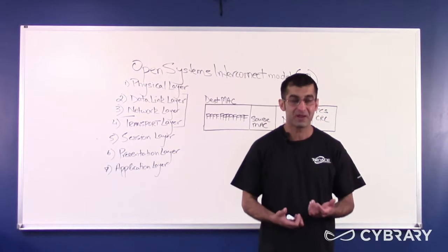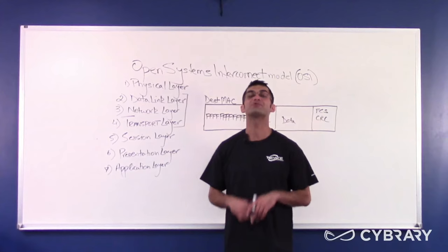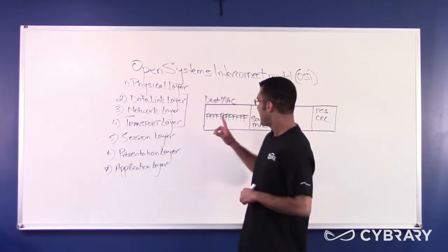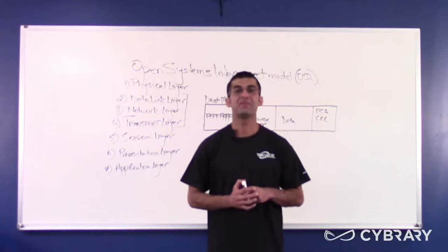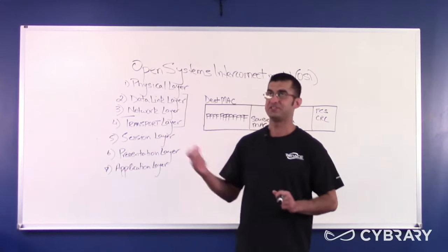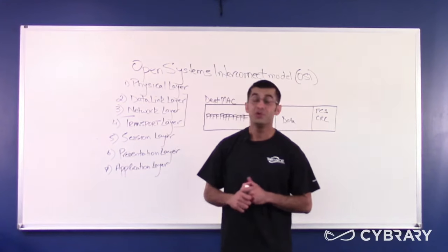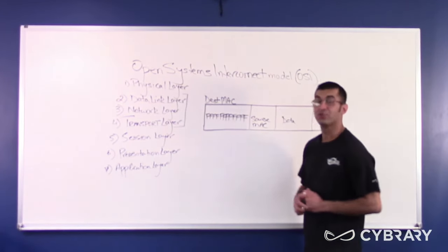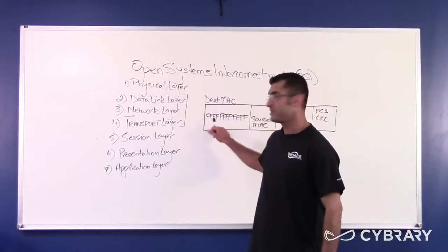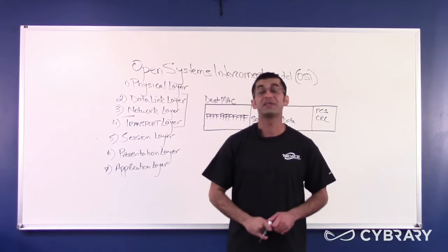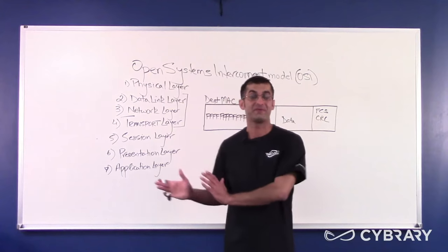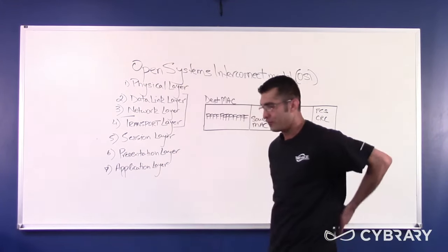What is the end result of a broadcast frame being received by a switch? It is sent out all ports except the port that originated the signal. Why? Because all F's will never exist in the MAC address table — the MAC address table, for the most part, only holds unicast addresses. So as soon as a switch receives a frame with all F's in the destination portion, the switch will send it out all ports. That is a broadcast, not a flood — the flooding behavior has a different purpose. Hopefully, we have that cleared up.